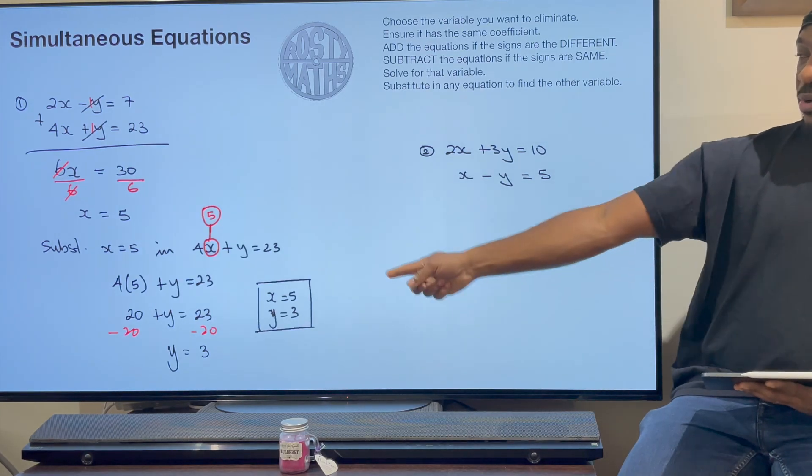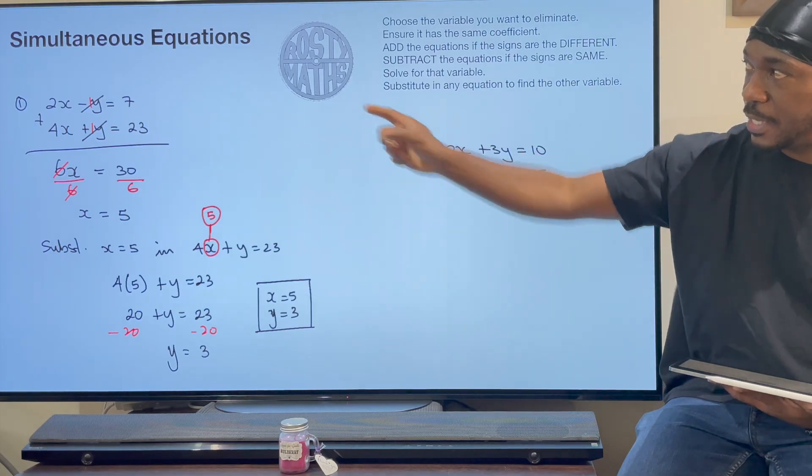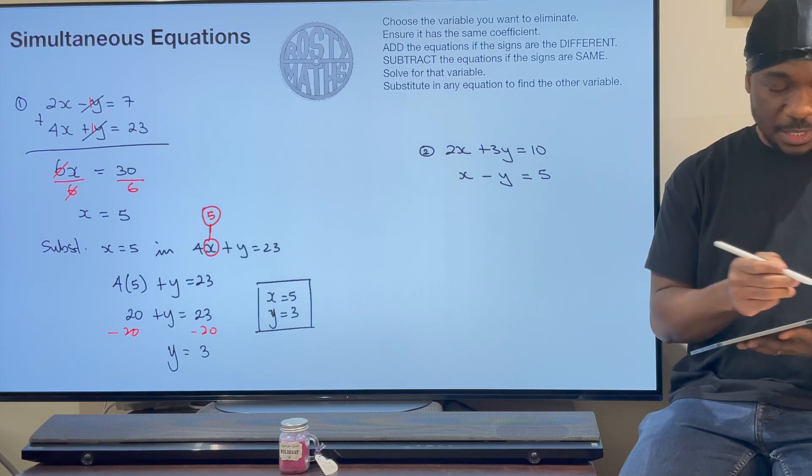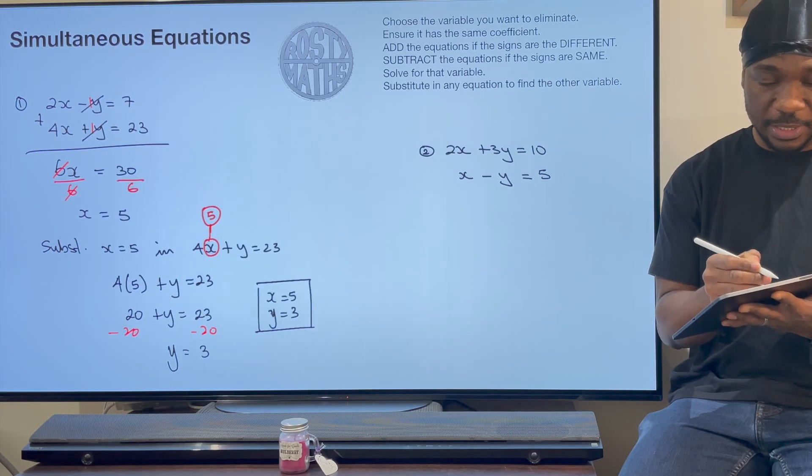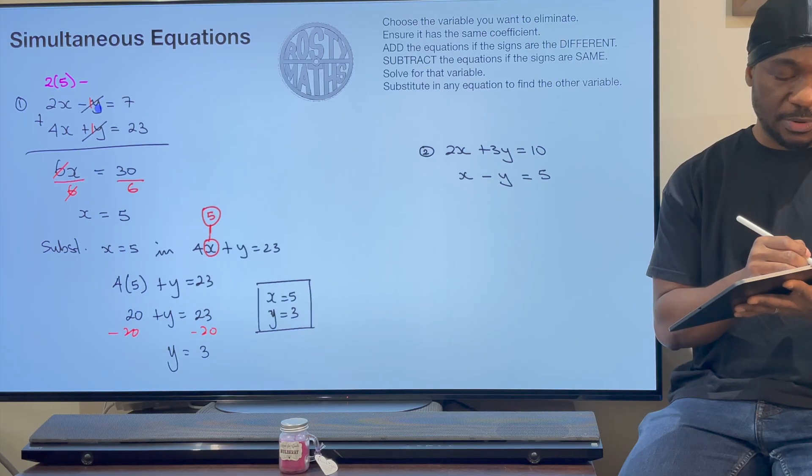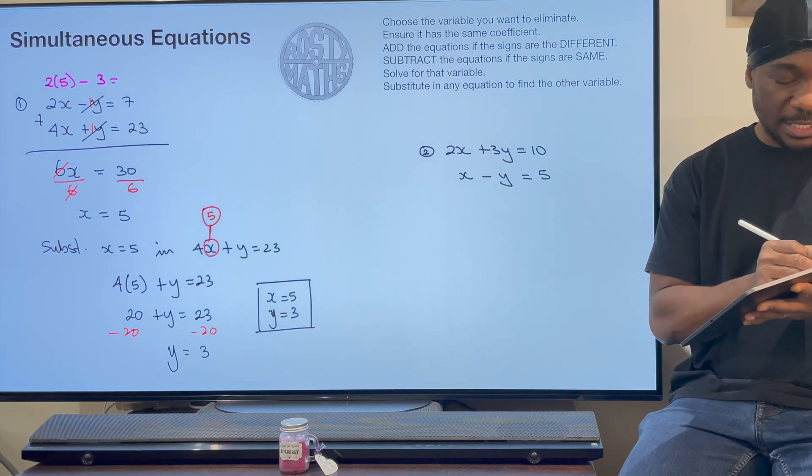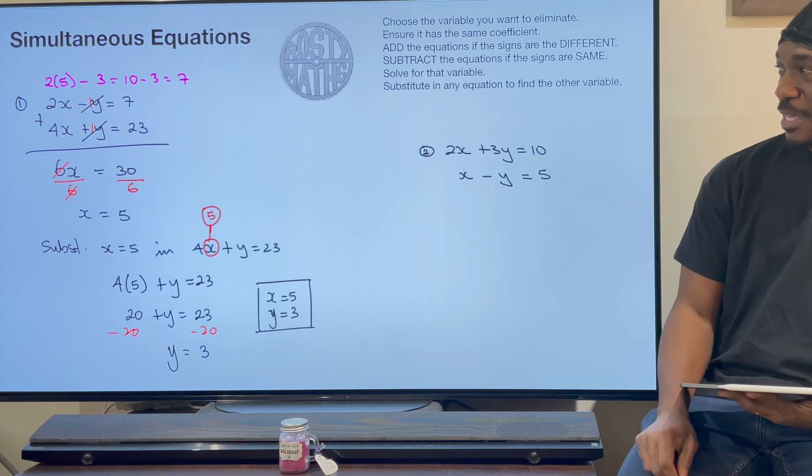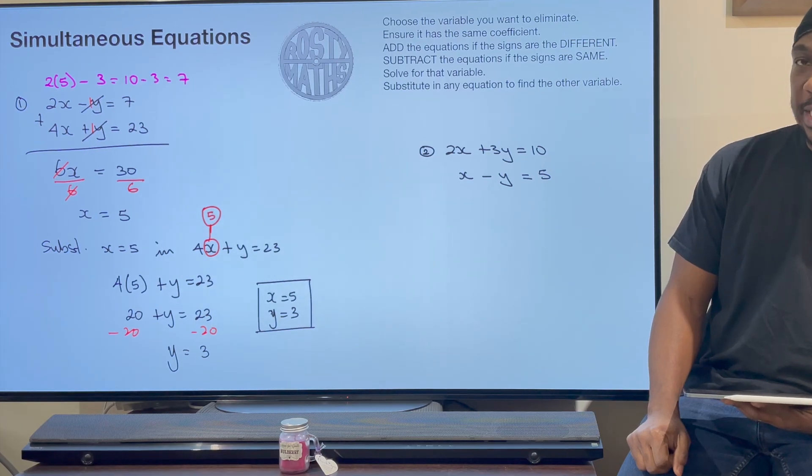Now, how do I know that that answer is right? We can put it back into one of those equations and see if it's right. I'm going to take this top equation. I know x is 5, so 2 times 5 take away 3, and I want to check if I will get 7. So 2 times 5 is 10, take away 3, and that is 7. I know for sure my two answers are right now. That's fantastic. Let's do one more question on the elimination method.